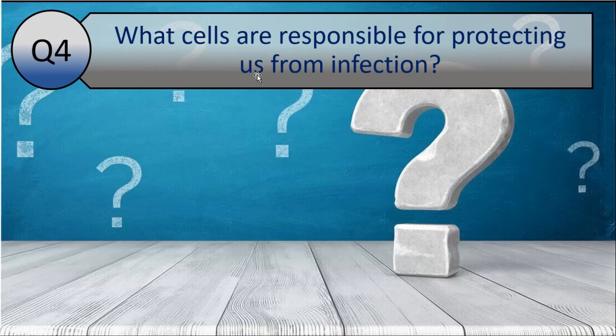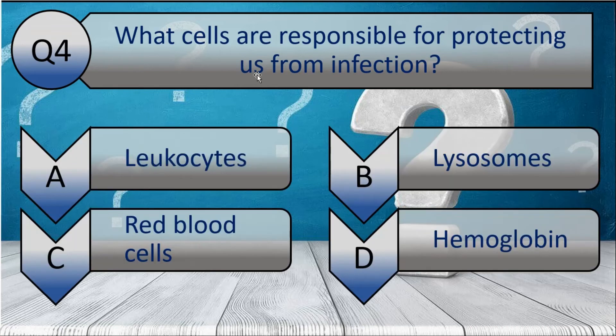Your 4th question is: what cells are responsible for protecting us from infection? Your options are A. Leukocytes, B. Lysosomes, C. Red Blood Cells, or D. Hemoglobin. And the correct answer is Leukocytes.